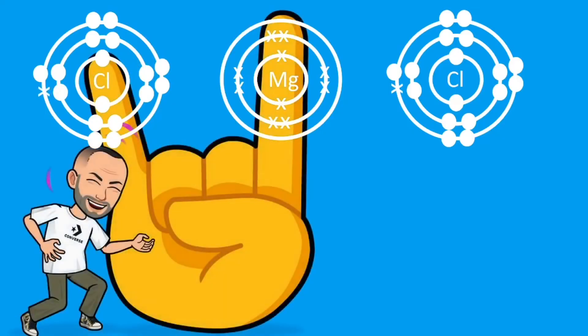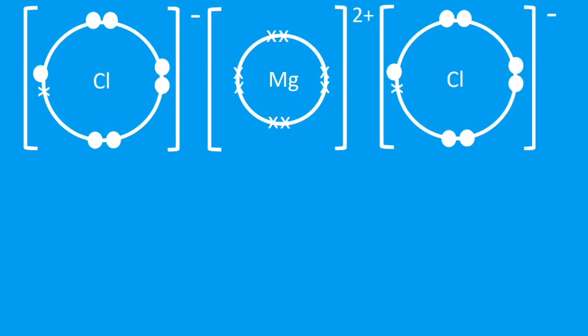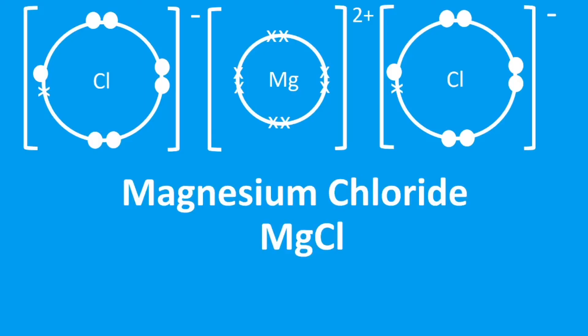The magnesium this time can donate that second electron to the second chlorine and now everything is happy with its full outer shells. When I'm using the word happy, I should be using the word stable. Now I'm going to put the square brackets and show the charges. Magnesium is 2+, chlorine is minus one. I'm removing the empty shells and the inner shells. This is now my dot and cross diagram for magnesium chloride with the formula MgCl2 because that shows there's two chlorines and one magnesium.